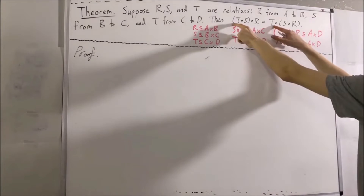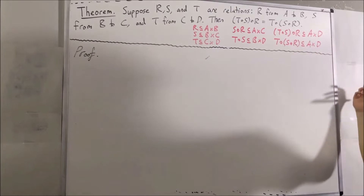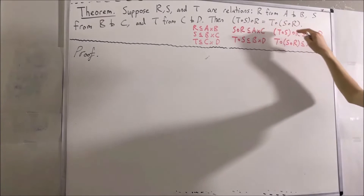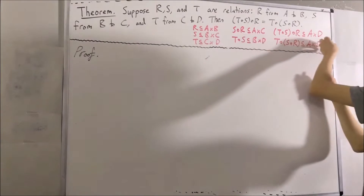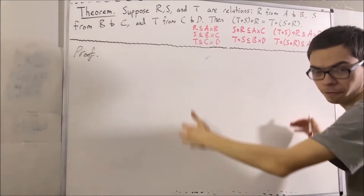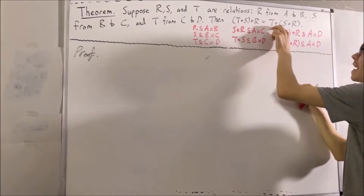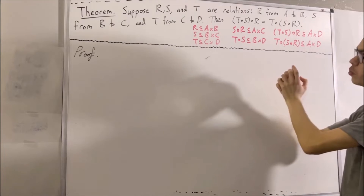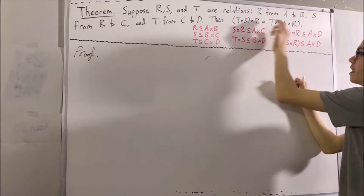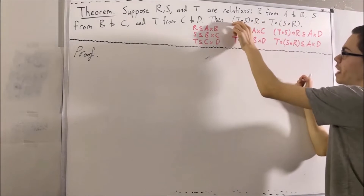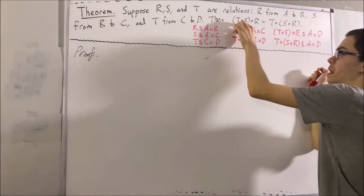Notice that these two sets are both subsets of A × D, which is what we would expect because we're expecting these two sets to be equal, so they should be subsets of the same sets. We wrote this information down because it's going to be useful throughout our proof. We're trying to prove that two sets are equal, so we can show that everything in the first set is also in the second set, and vice versa. Let's start by considering an arbitrary element of the first set.